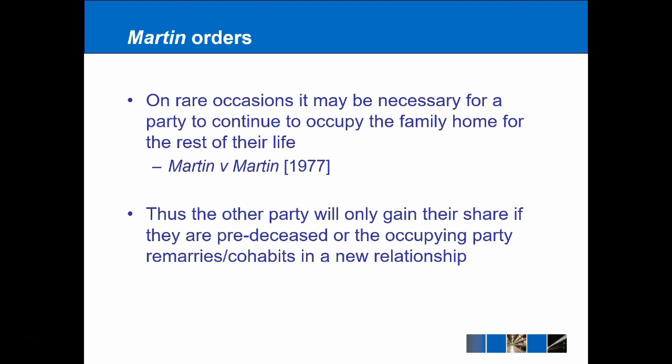Once that party has died, the property would then simply revert back to the other party and they will be able to take ownership. However, the other party is also going to be able to gain their share back if the party who remains in the home either remarries or they cohabit as part of a new relationship. These Martin orders can still be used in cases where there is a child, but again these orders may not be as popular as they used to be because it's not really establishing the clean break that we're looking for under Section 25A.